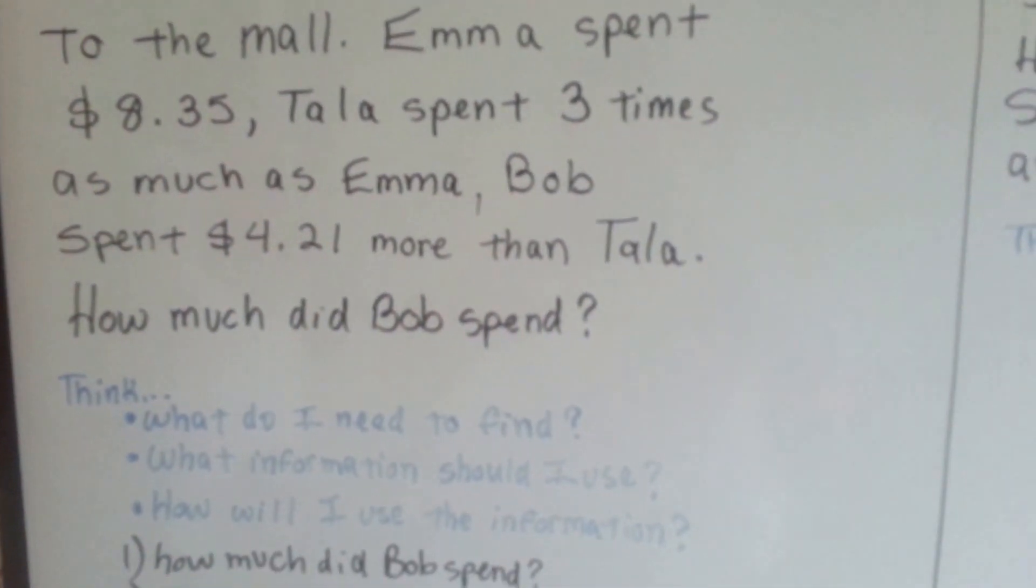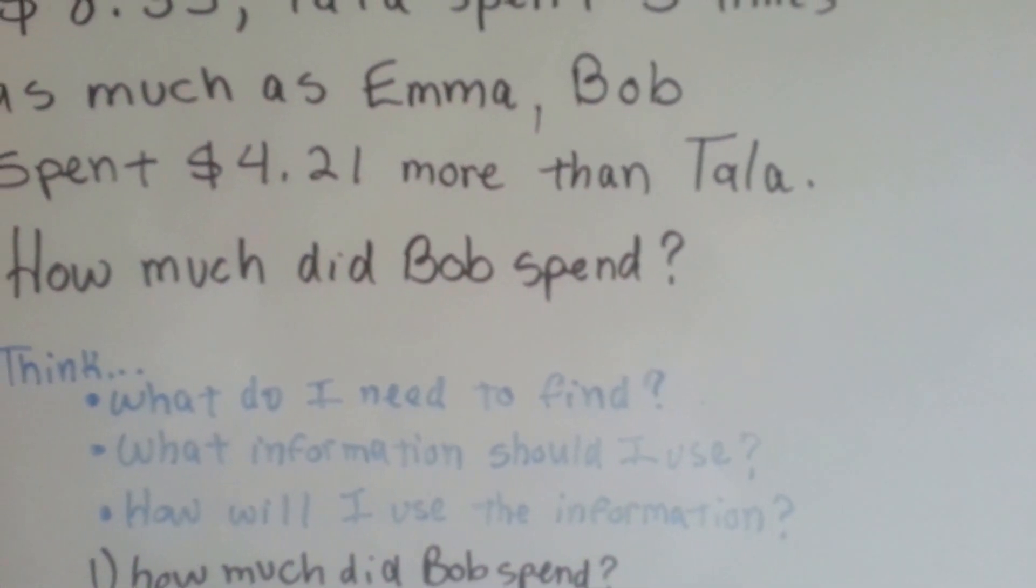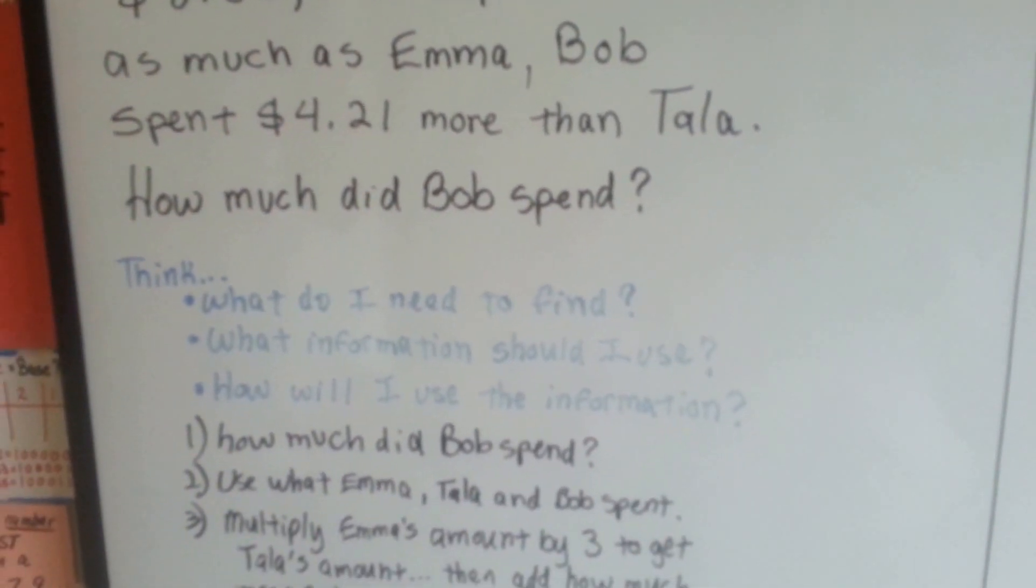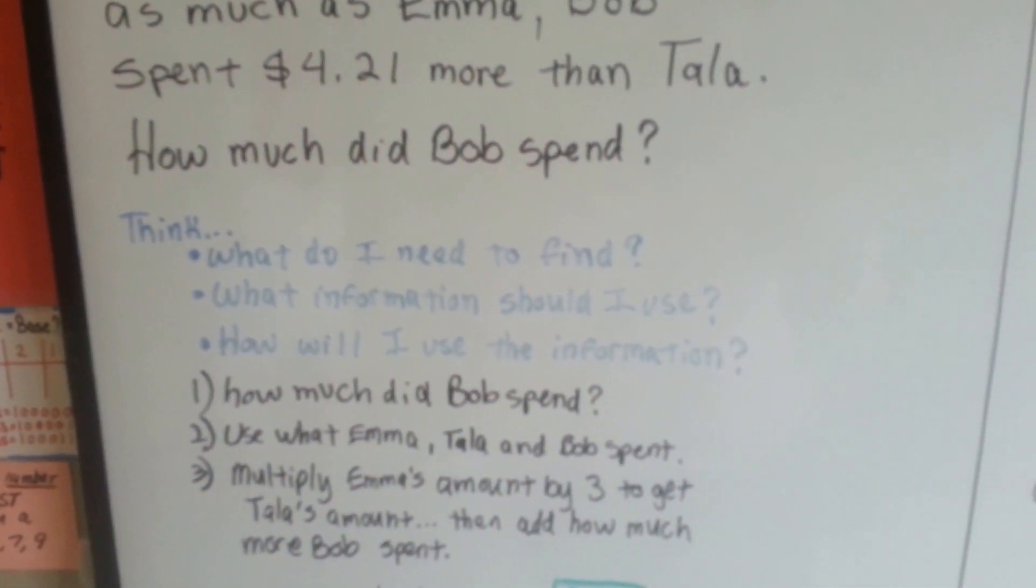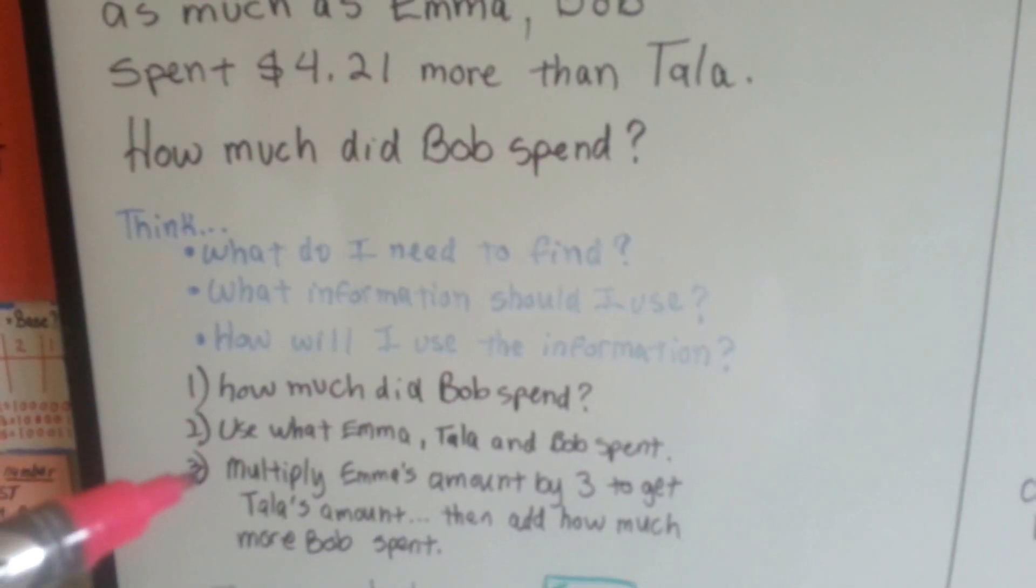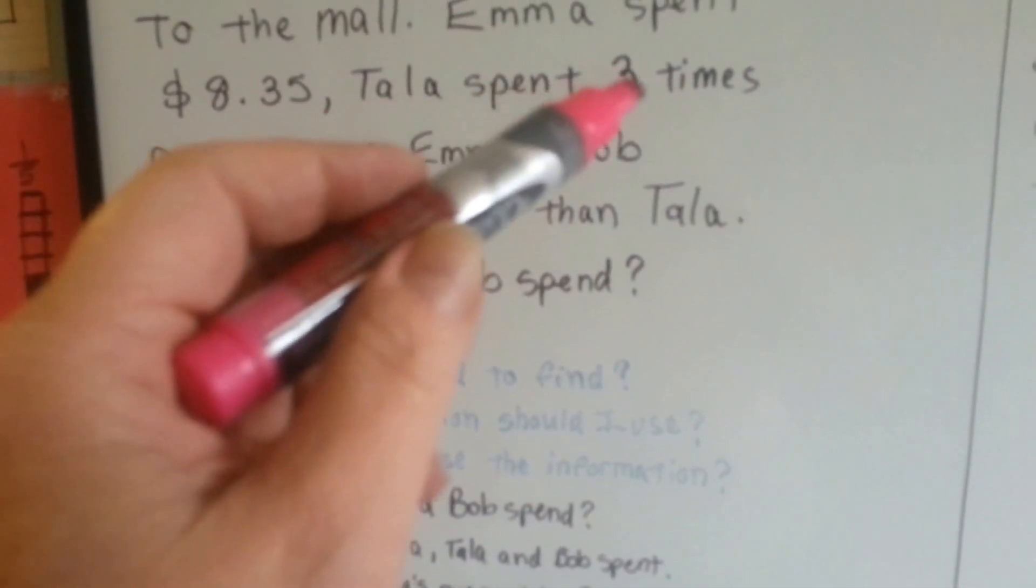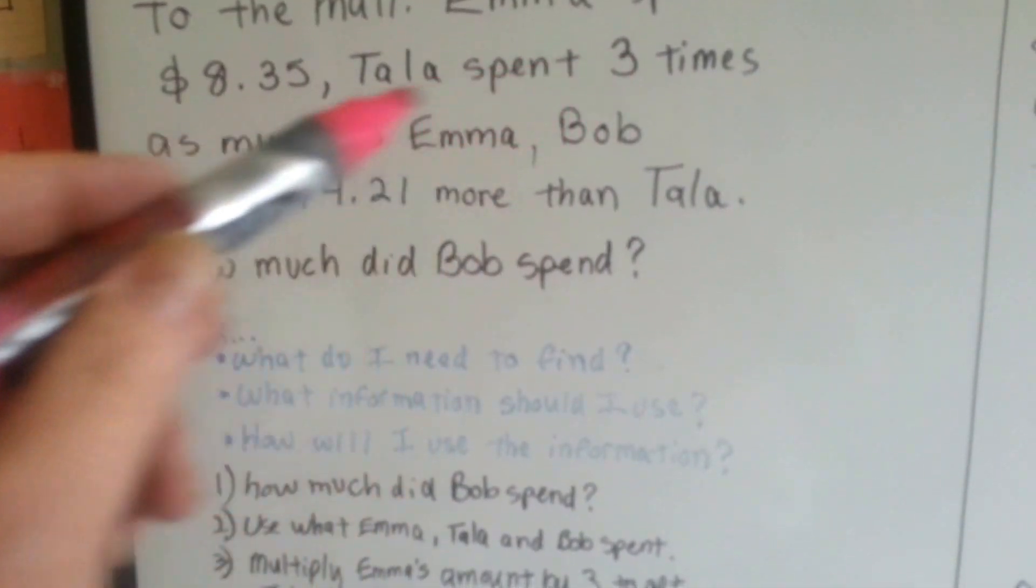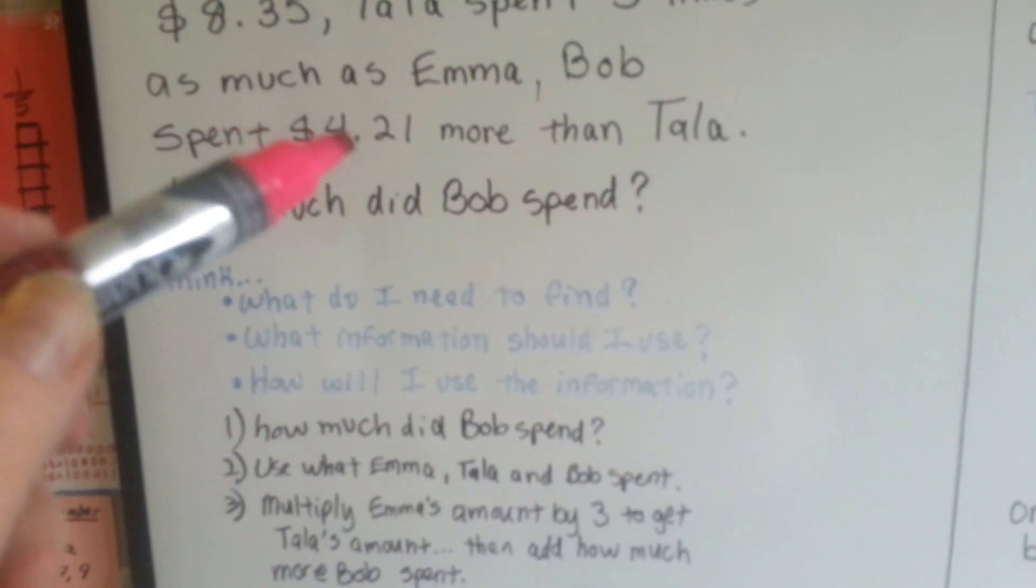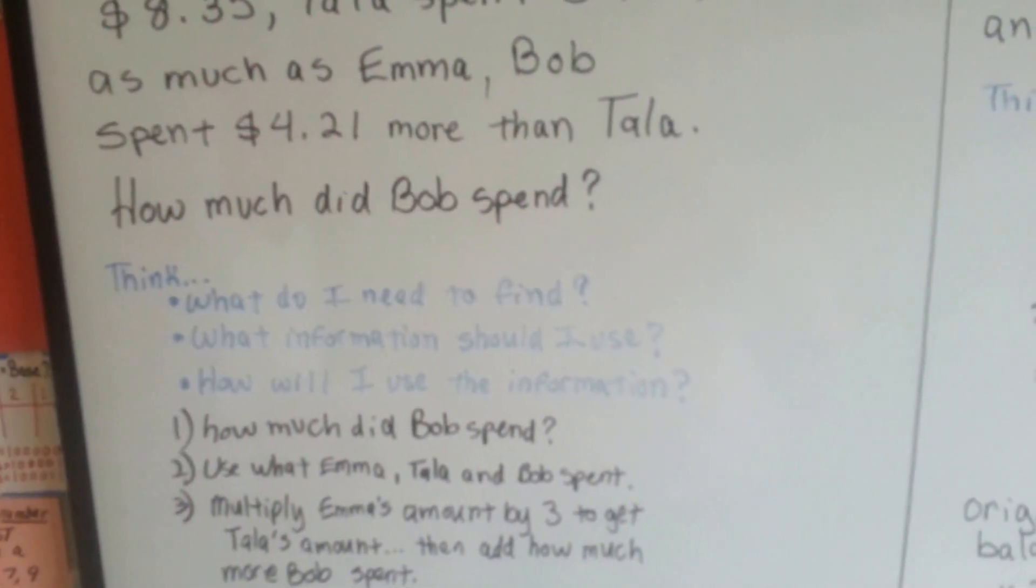So we have to think, what do I need to find? What information should I use? How will I use the information? We need to find how much did Bob spend. We need to use what Emma, Tala, and Bob spent together. We need to multiply Emma's amount by three because Tala spent three times and we'll find Tala's amount. And then we need to add the $4.21 to Tala's amount to find out what Bob had.